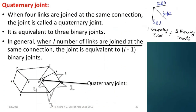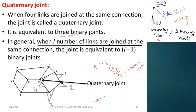A quaternary joint is equivalent to three binary joints. The general formula is L minus one, where L is the number of links. For a quaternary joint, L equals four, so four minus one equals three — one quaternary joint equals three binary joints. Similarly, one ternary joint equals two binary joints because L equals three, so three minus one equals two.